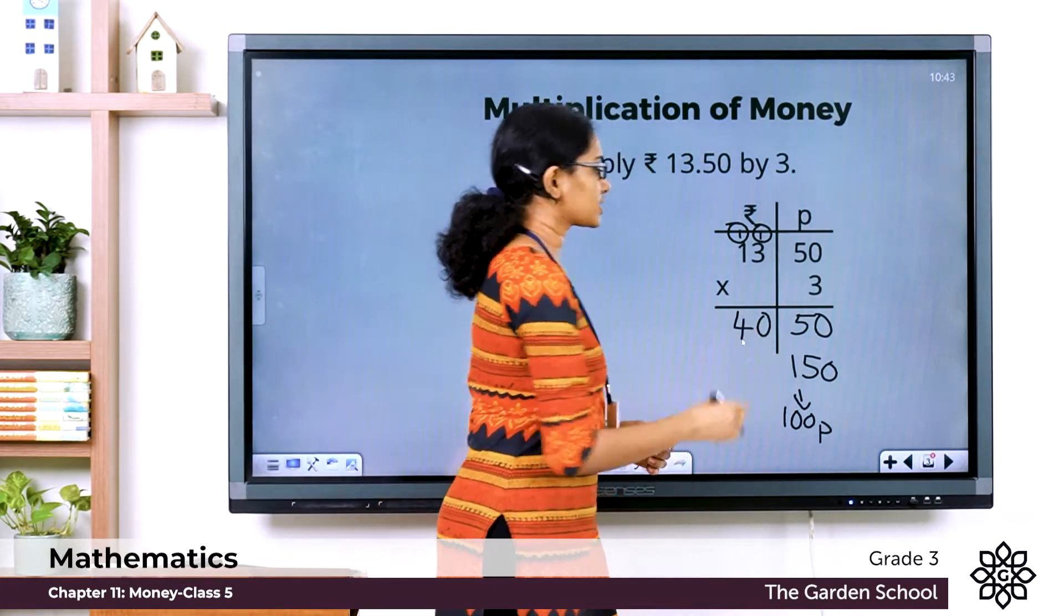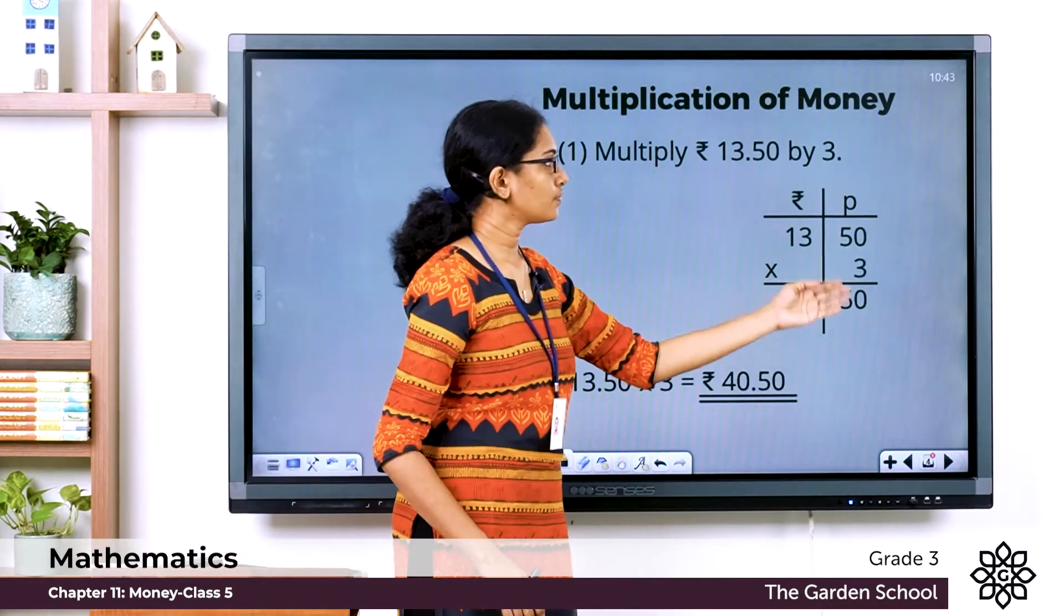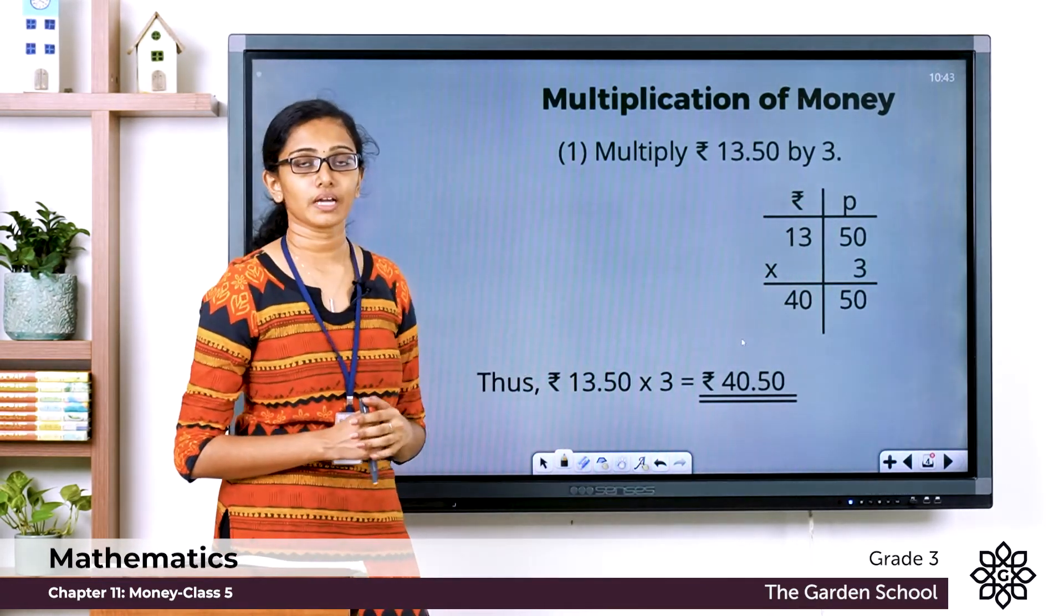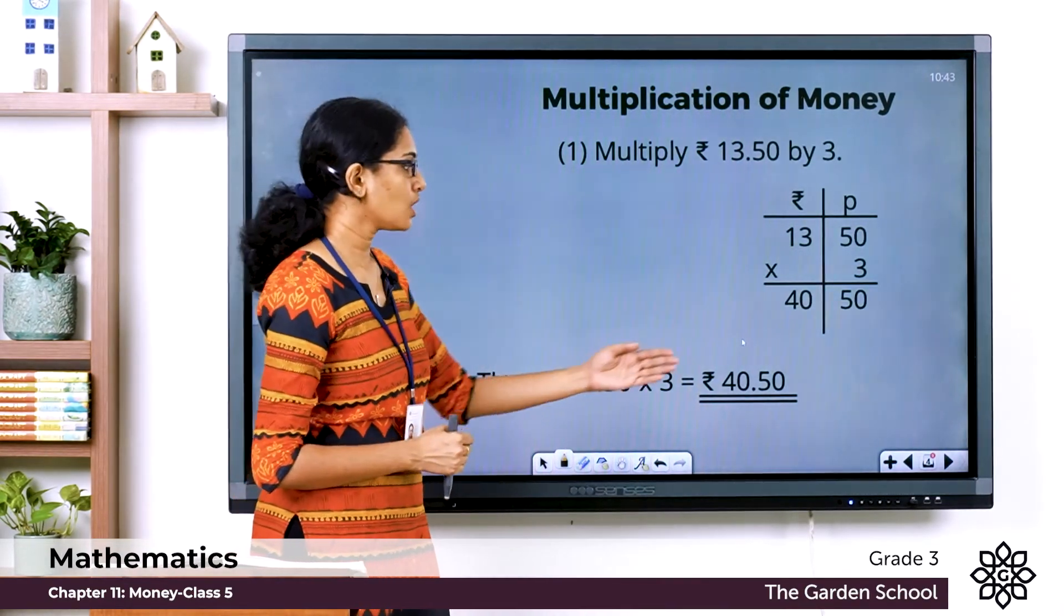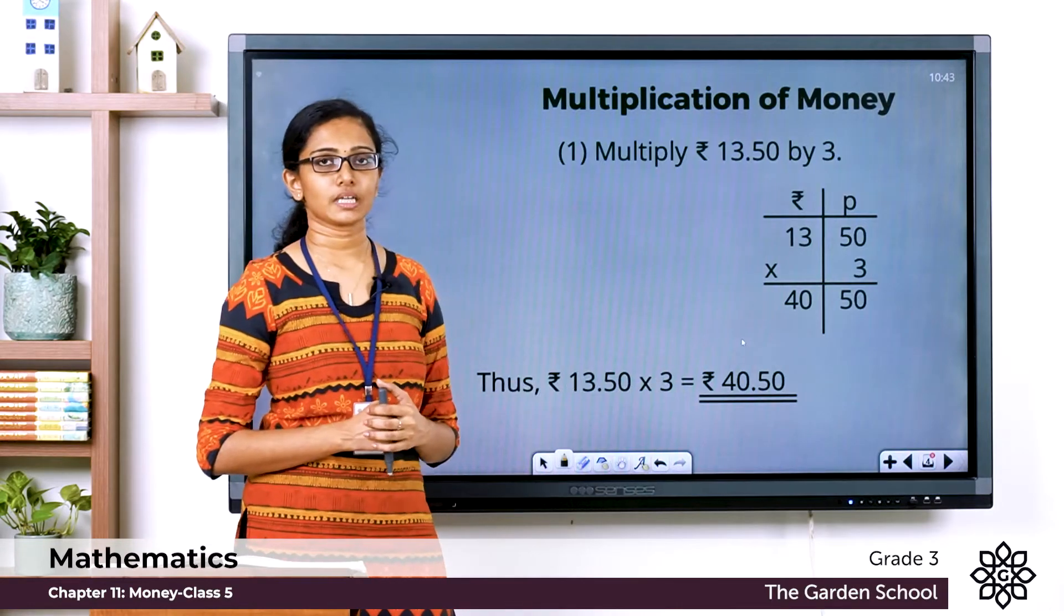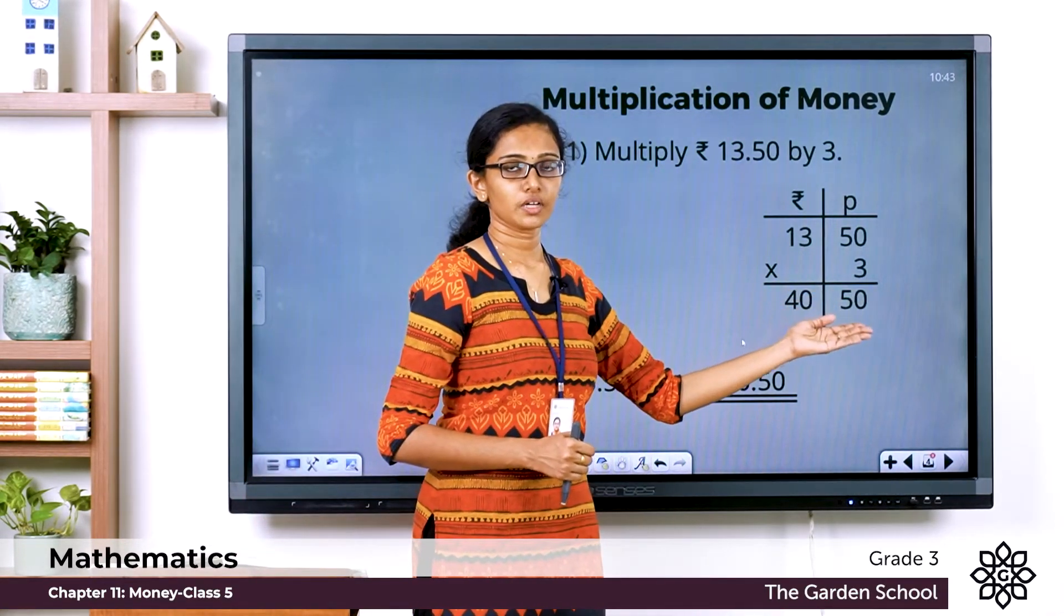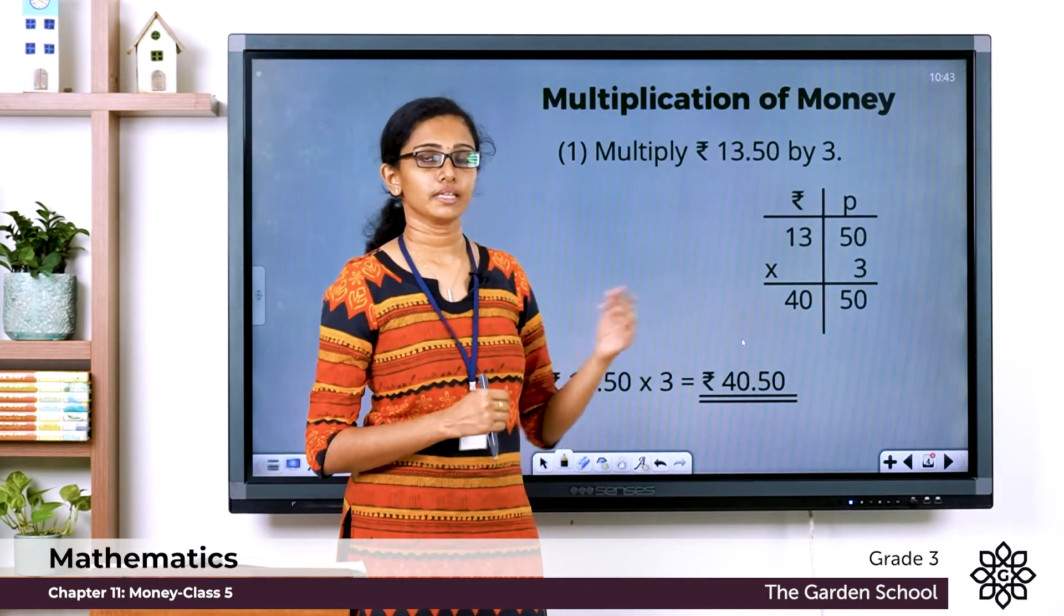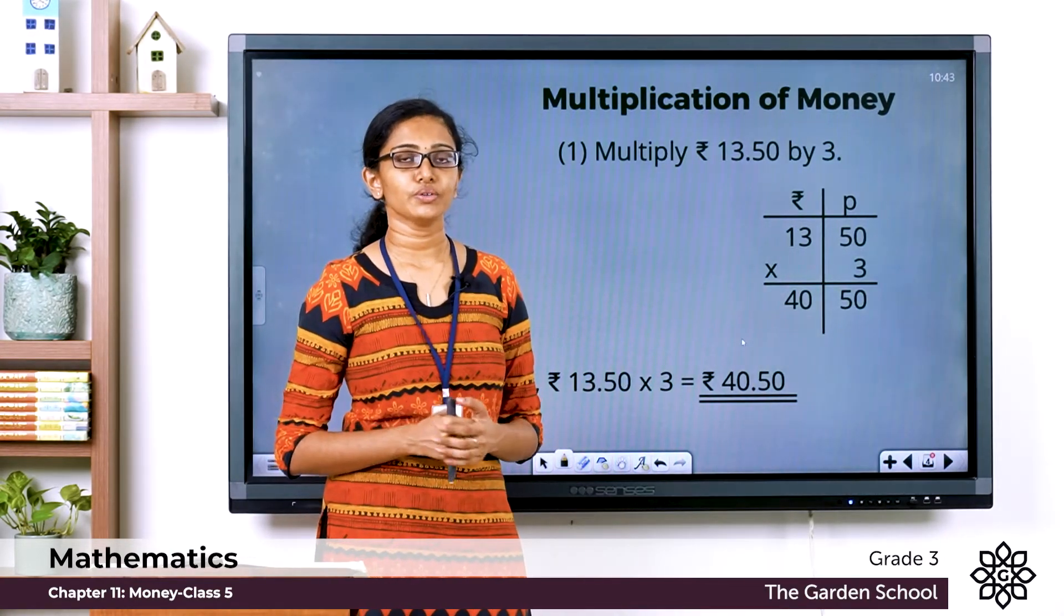What is the product? The product is 40 rupee 50 paisae. So the amount 13 rupee 50 paisae multiplied by 3 will give you a total amount of 40 rupee 50 paisae. Just keep in mind that when you carry over the 100 paisae from the paisae column to the rupee column it becomes 1 rupee there, the equivalent of 100 paisae. Hope this is clear to you.